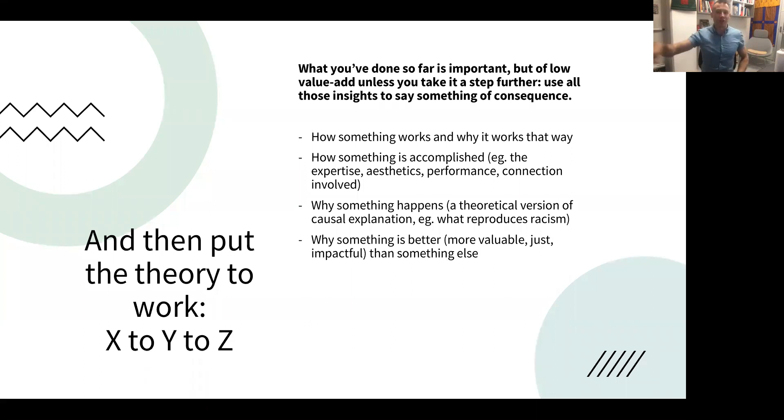You might be able to use those patterns that you see through theory y to say how something works, and why it works in that particular way, how something is accomplished, the expertise and aesthetics, performance and connection involved. Maybe something amazing has happened and people want to understand how did they get to do that? Maybe they managed to achieve something in some conditions that people in similar looking conditions have not been able to do. And wow, okay, then the theory is starting to bite and give me something useful. People say there's nothing so practical as a good theory if you can do this sort of thing with it.